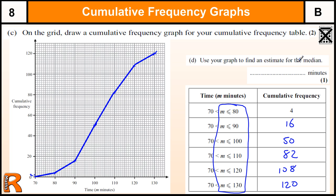Use your graph to find an estimate for the median. So the median is the middle value. And on cumulative frequency, because we consider it to be continuous data when it's been grouped, we just go from the middle value, which is the 60th value, to our graph.